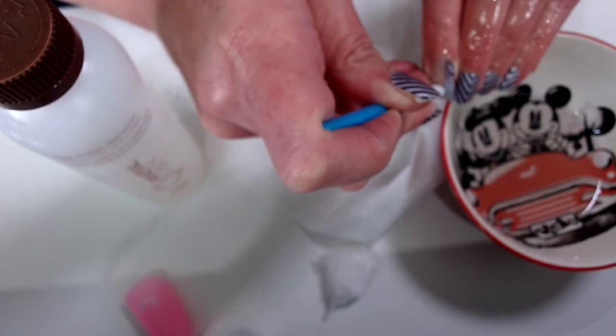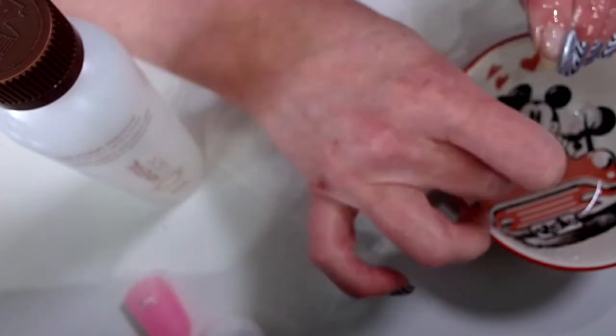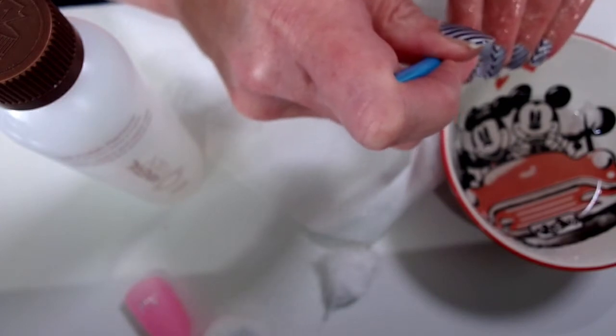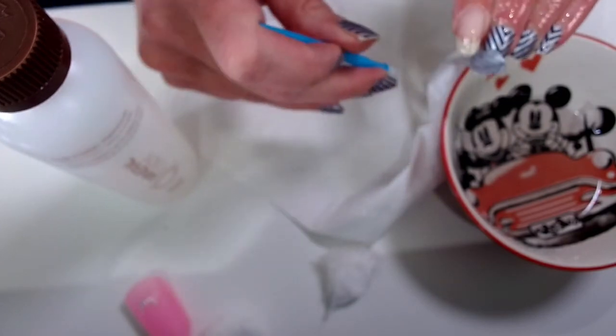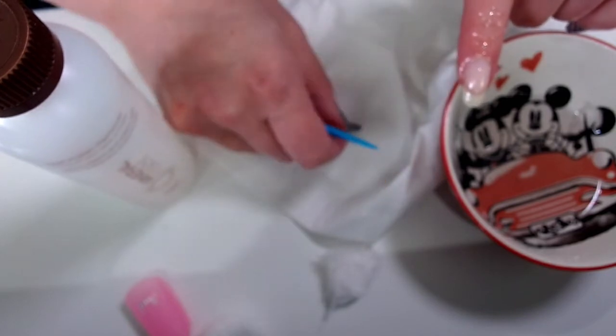I'm not forcing it. I'm just sliding and if I meet any resistance I'll get a little bit more oil and just slide it the rest of the way off. So there it is, that's the wrap. It just slides right off.